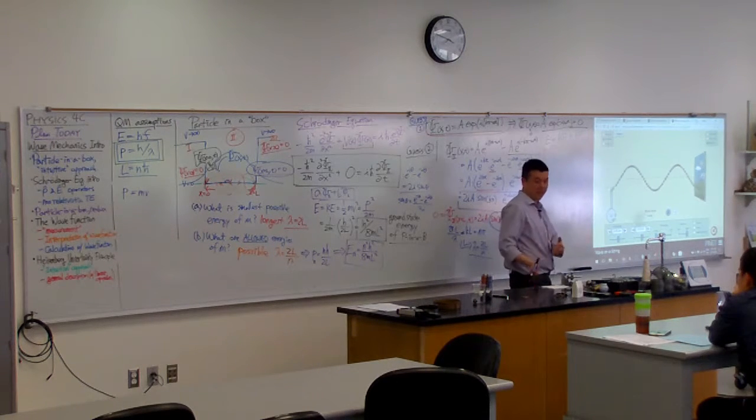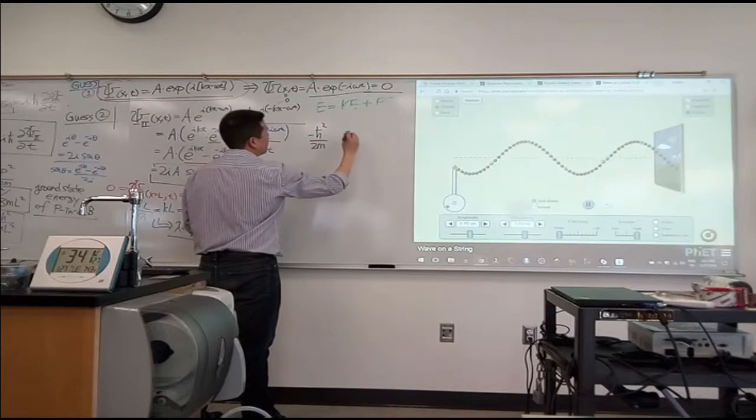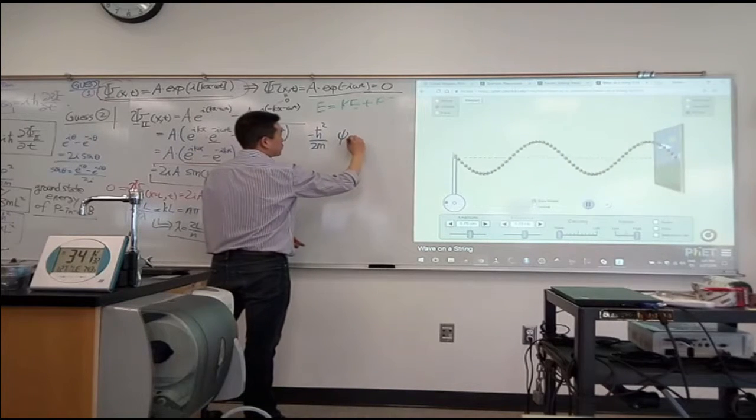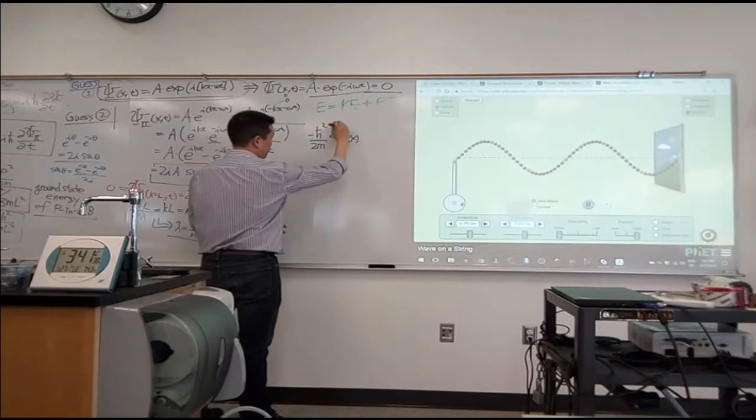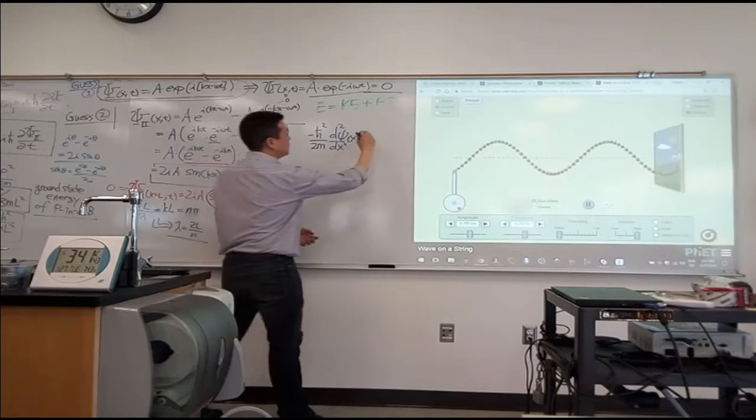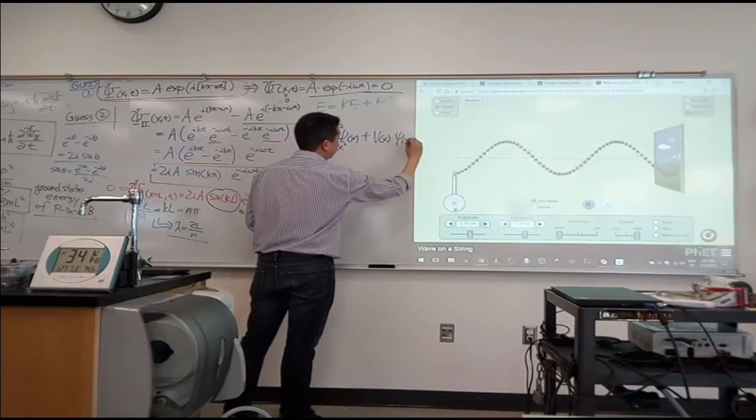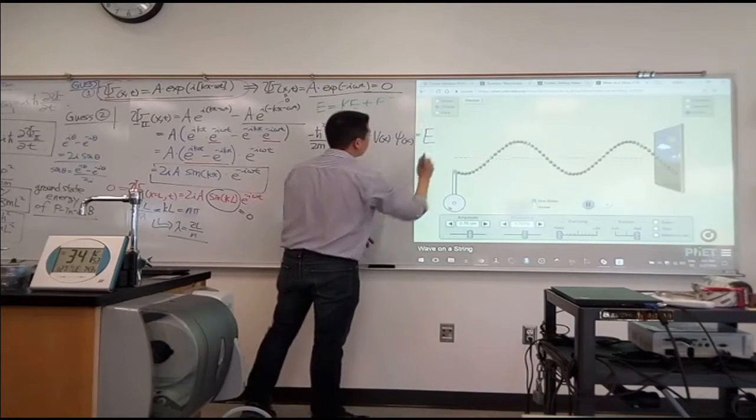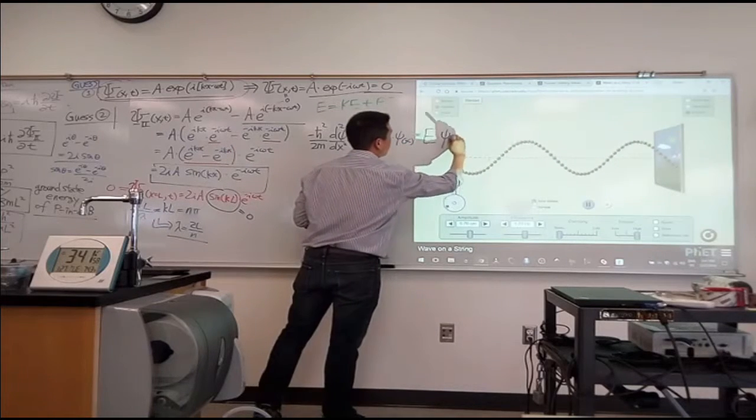So this is the time-independent Schrodinger equation. Minus h bar squared over 2m. And now I use lower case psi, which will only be a function of position. That's the time-independent portion. And that's going to be an ordinary derivative with respect to x, double still, plus V(x) times the same time-independent wave function is equal to E, just the energy number, not an operator, just the number times psi of x.